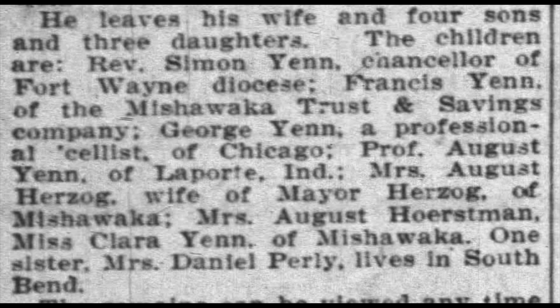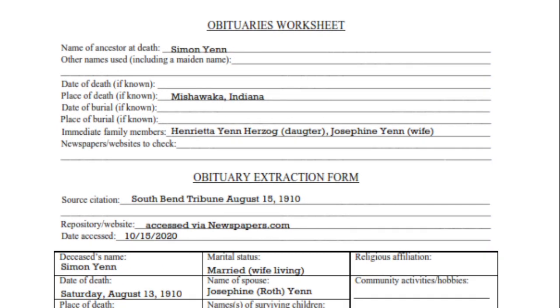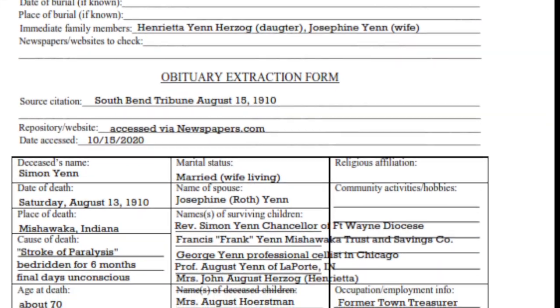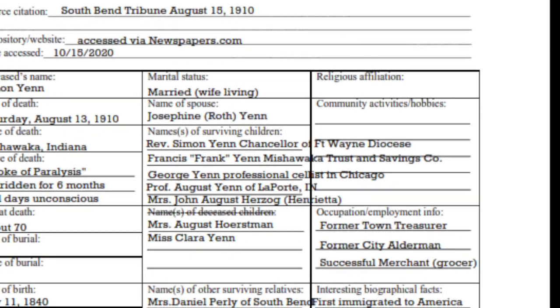Let's take a moment to talk about some problems you can encounter when locating obituaries. Here we find a minor error. I know this is incorrect because my previous research has been consistently different. Notice that this refers to Mrs. August Herzog, wife of Mayor Herzog of Mishawaka. Most of that is correct. However, Mrs. Herzog is the wife of John August Herzog, who is always referred to in the paper that way, not as August. August Herzog Sr. was the mayor's father, and August Herzog Jr. was his brother, and we don't want to confuse these men.